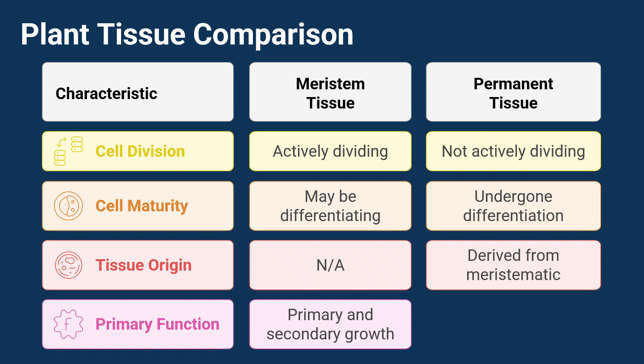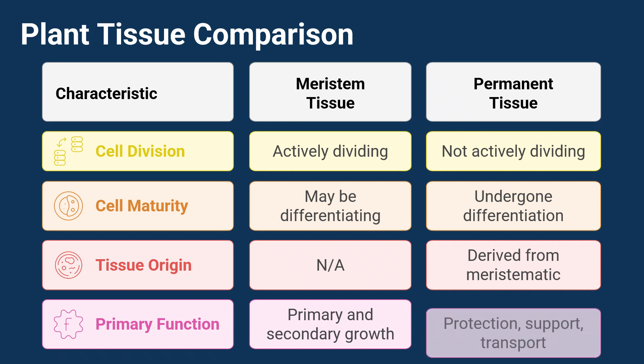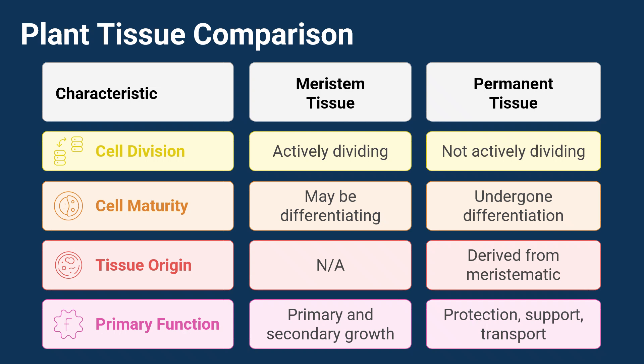Tissue origin. Permanent tissues are derived from meristematic tissue. So meristem cells divide, then they transform and become permanent tissue cells — it's a whole journey. Primary function. The big jobs for permanent tissue include protection, support, and transport.